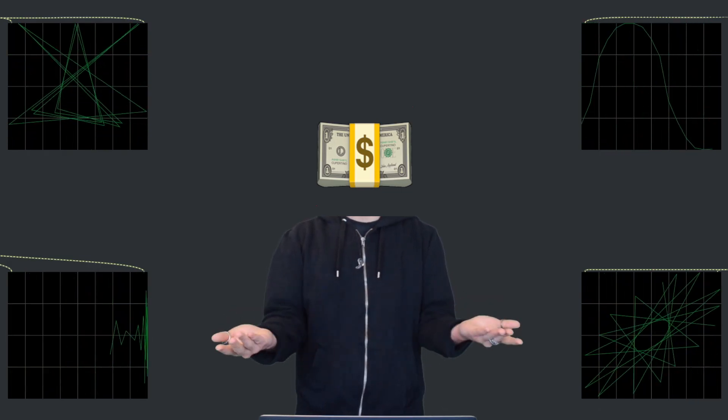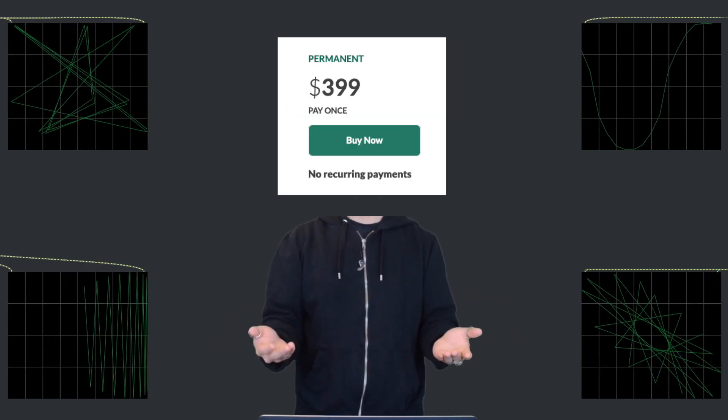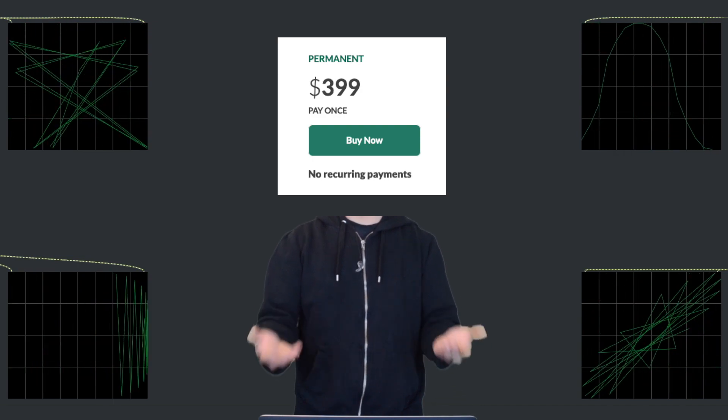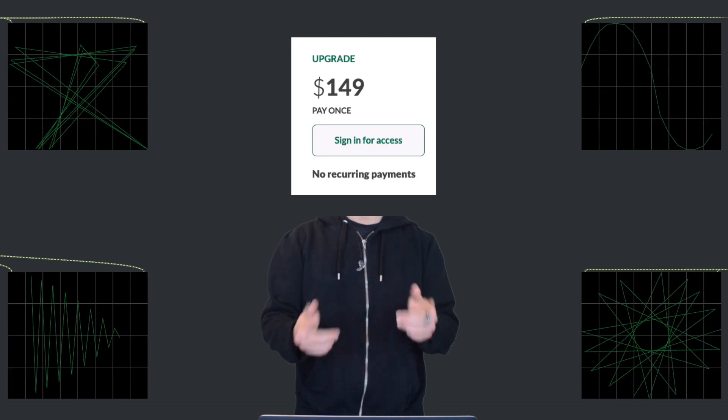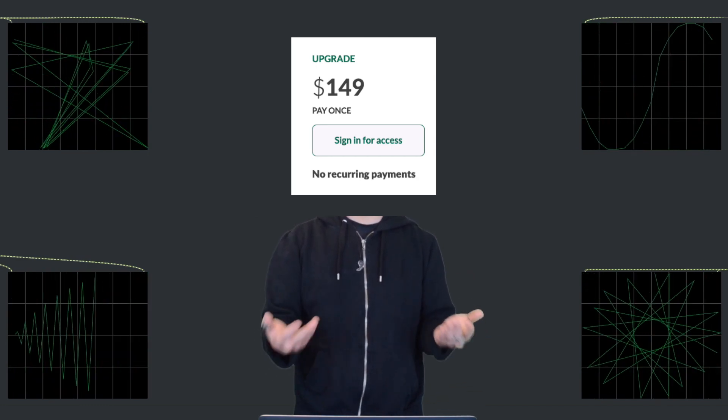Speaking of money, what's the price? For a permanent license, it is $399 as of right now. If a new version like Max 9 eventually comes out, you can upgrade by paying around $149.